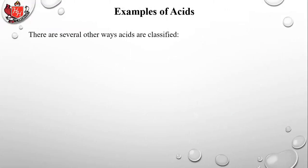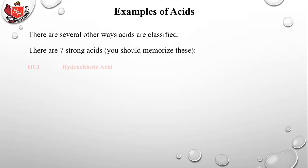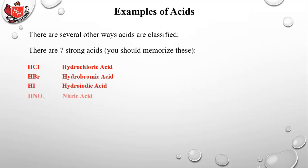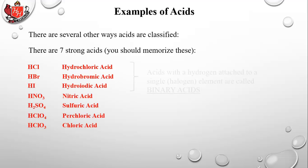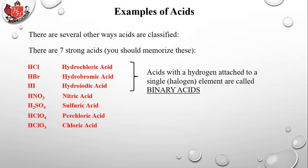Acids can also be classified by structure. The first three strong acids — HCl, HBr, HI — are called binary acids: they have a hydrogen attached to a single element. Those three elements, chlorine, bromine, and iodine, are all in the second-to-last column of the periodic table — the halogen group. Binary means two: it's a hydrogen and one other element.